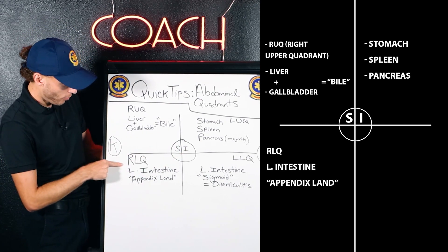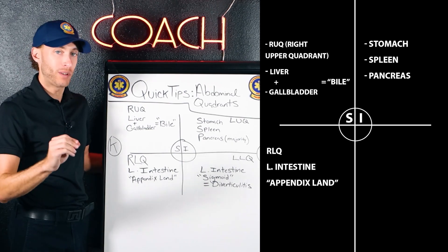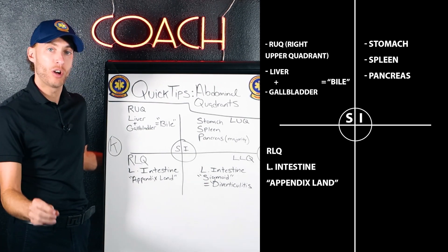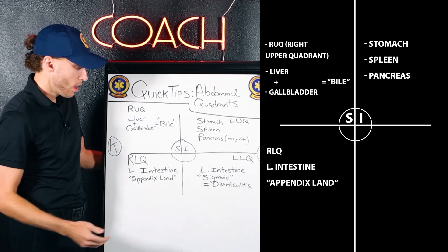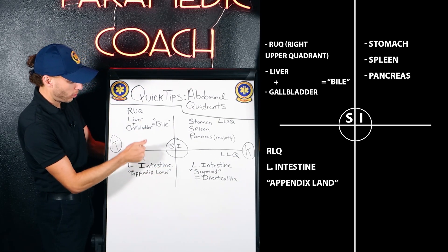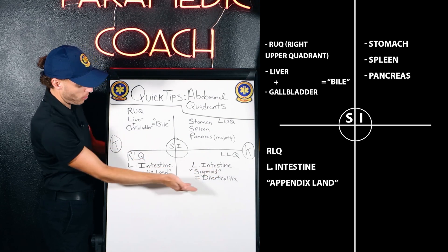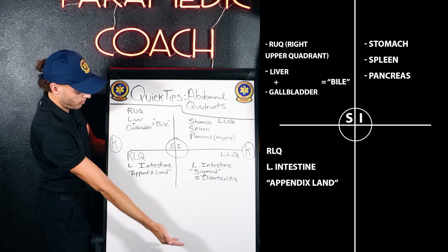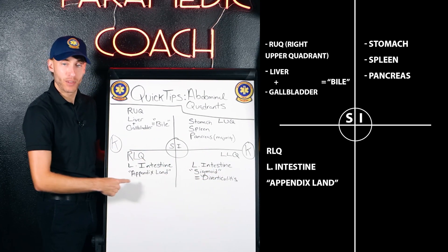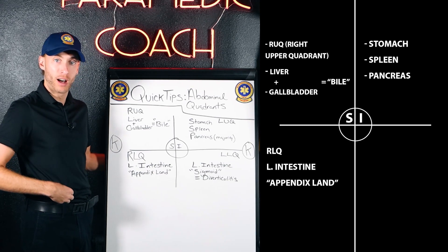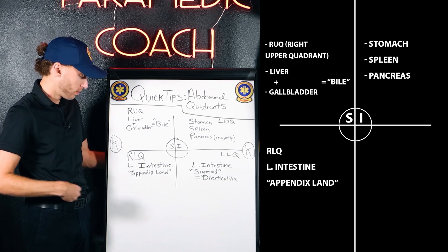Over here we have the right lower quadrant — I always tell my students, this is appendicitis land. Your large intestine starts here, loops around, goes transverse, comes down, then sigmoid rectum. The big thing here is appendicitis; your appendix is down here in the right lower quadrant.